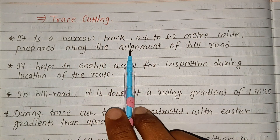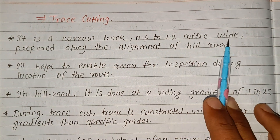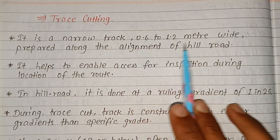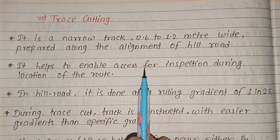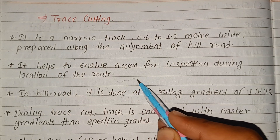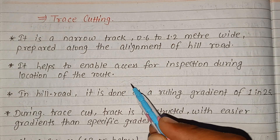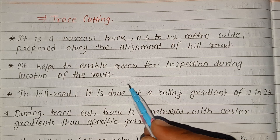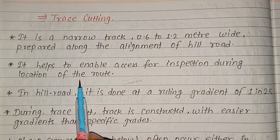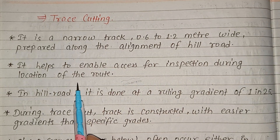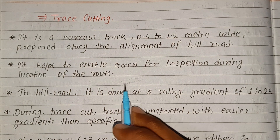It is a narrow track. The trace cut is a narrow track that is 0.6 to 1.2 meters wide, prepared along the alignment of the road. The trace cut enables access for inspection during location of the route.